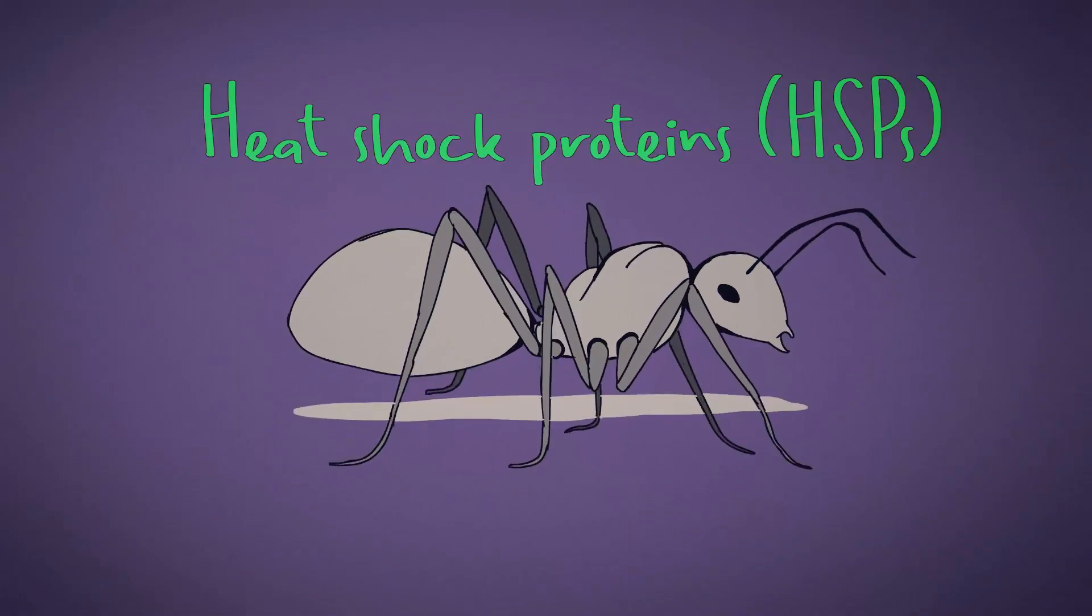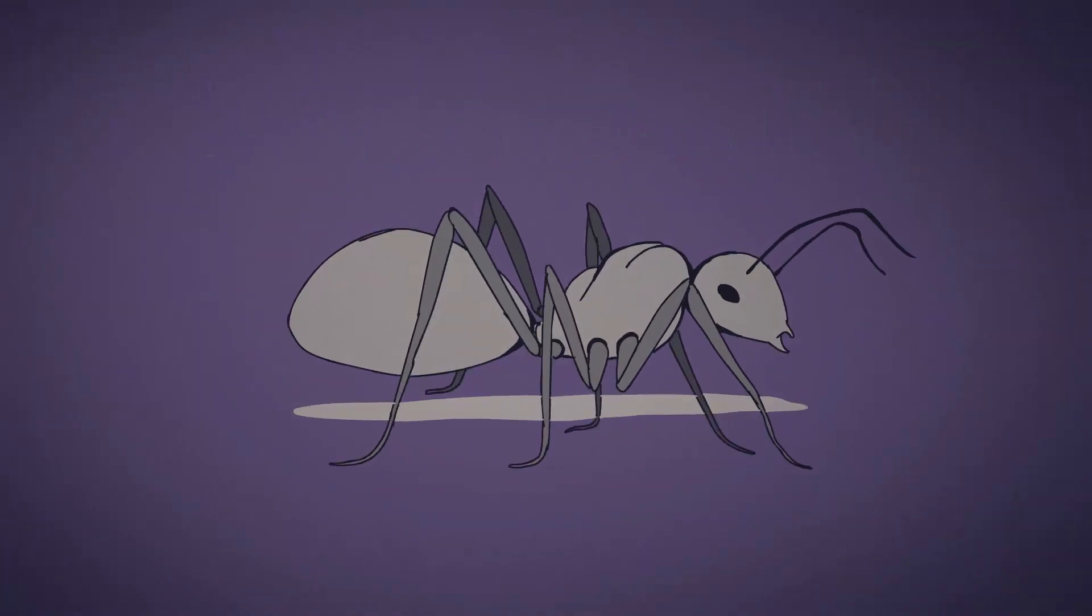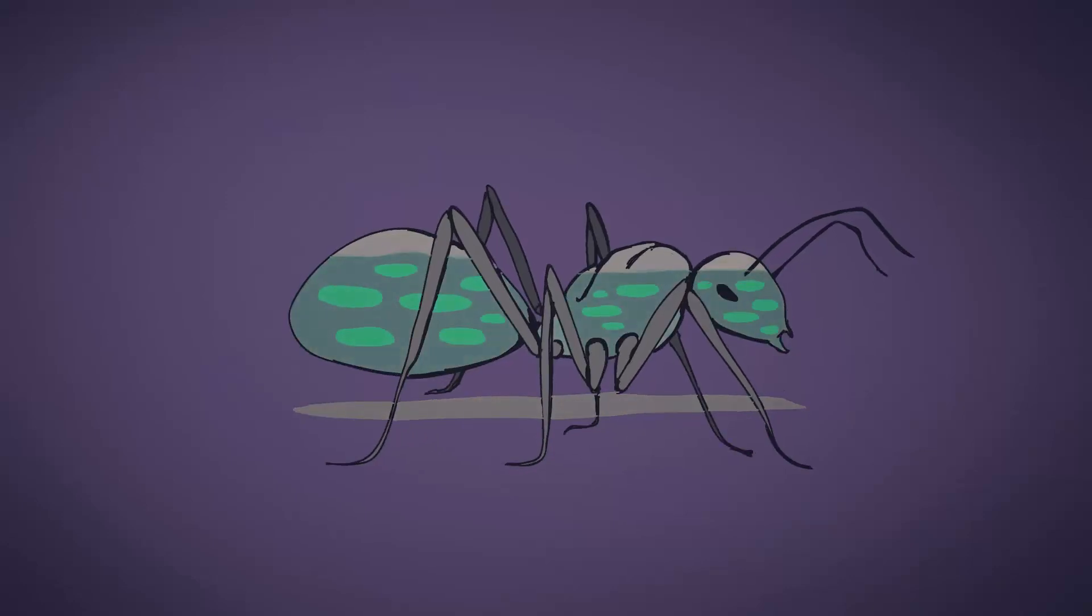They produce heat shock proteins, HSPs, but unlike other animals, they do this not in direct response to heat. Instead, they do this before leaving the nest, so they do not suffer the initial damage when their body temperature rises quickly. These HSPs allow cellular functions to continue even at very high body temperatures. If they did not produce the proteins in anticipation of the extreme heat, they would die before the proteins could have their effect.